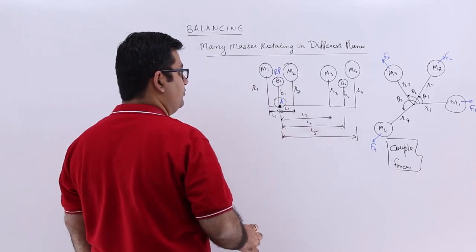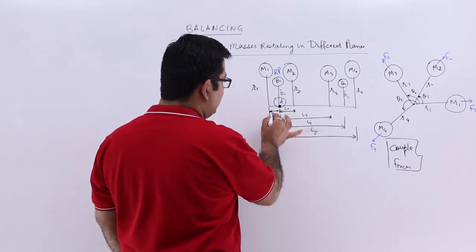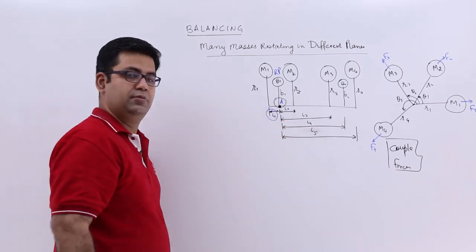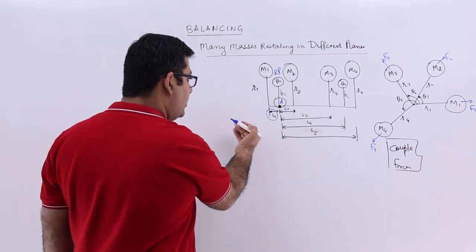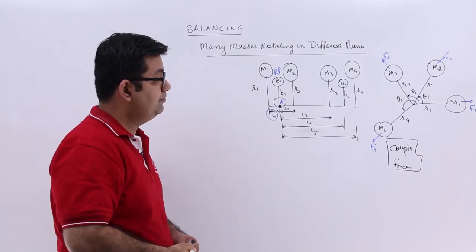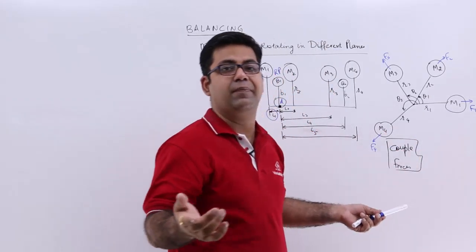So I would say because this is a negative distance because it is towards the left of the origin, so the couple due to this force would be a negative couple.